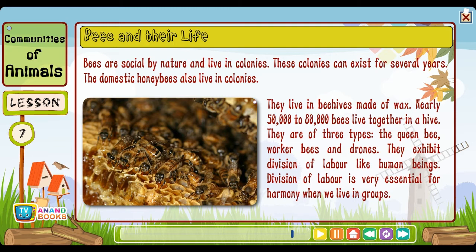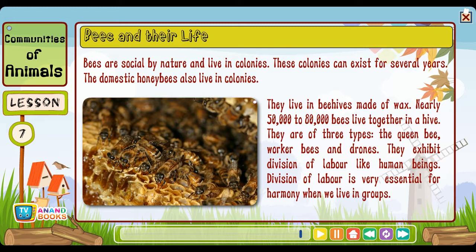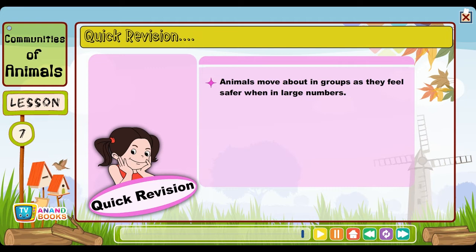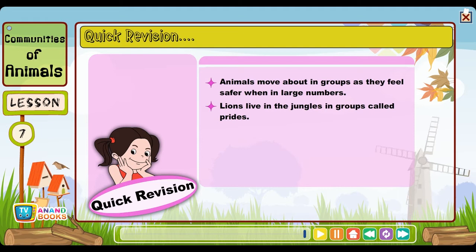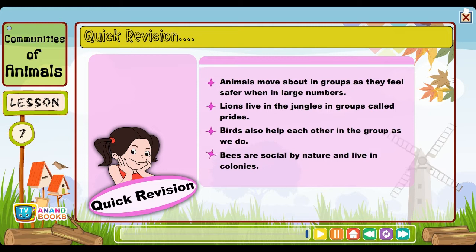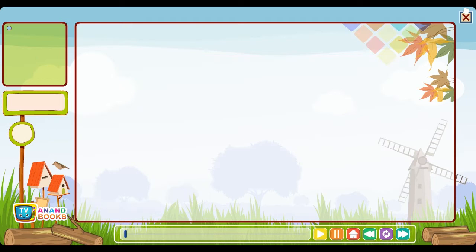Bees and their life: Bees are social by nature and live in colonies that can exist for several years. Domestic honey bees live in beehives made of wax — nearly 50,000 to 80,000 bees live together in a hive. They are of three types: the queen bee, worker bees and drones. They exhibit division of labor like human beings. Quick revision: Animals move about in groups as they feel safer when in large numbers. Lions live in groups called prides. Birds also help each other in the group as we do. Bees are social by nature and live in colonies.